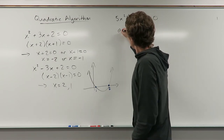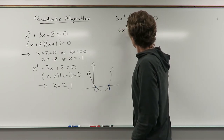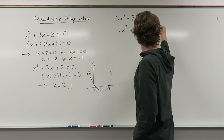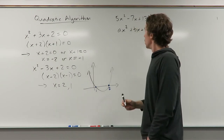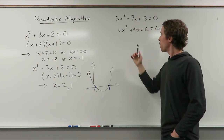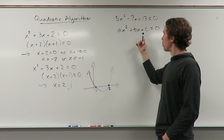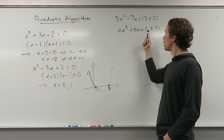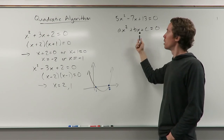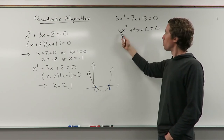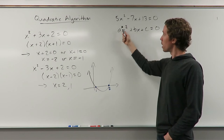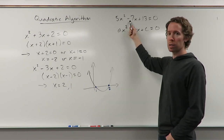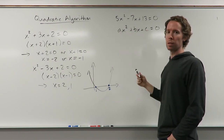In general, we would have something like this. I'm going to write it down like this because we can have any number here, any number here, any number here. So for this example, a is 5, b is negative 7, and c is 13.